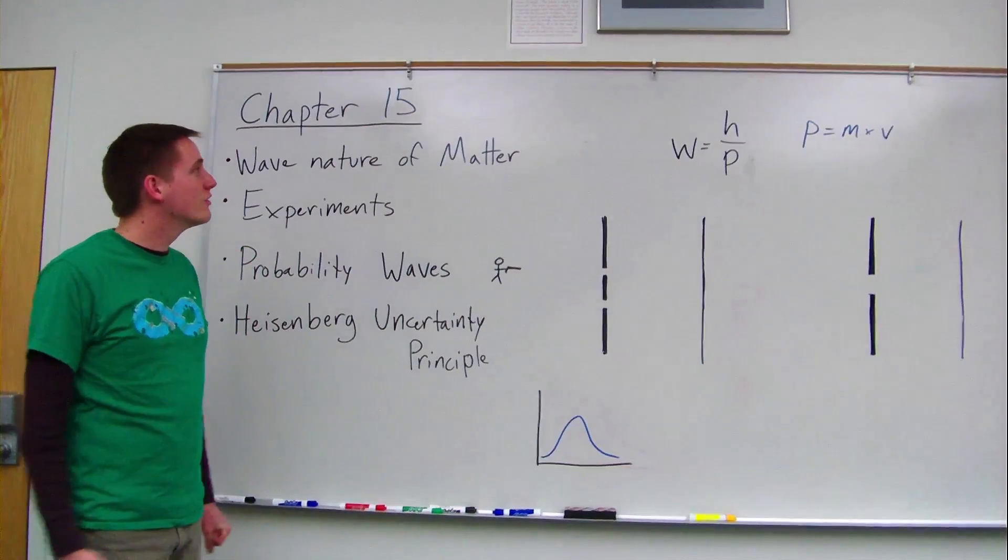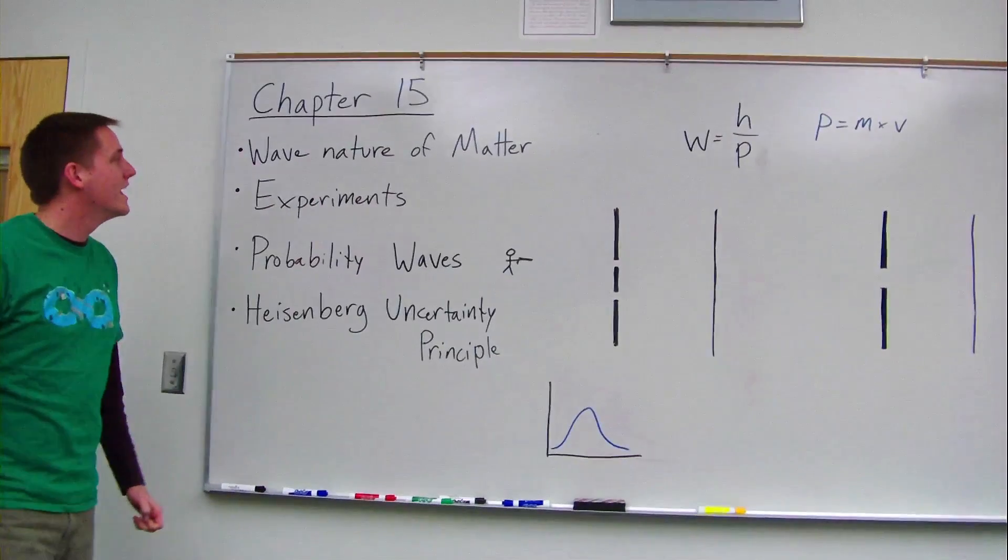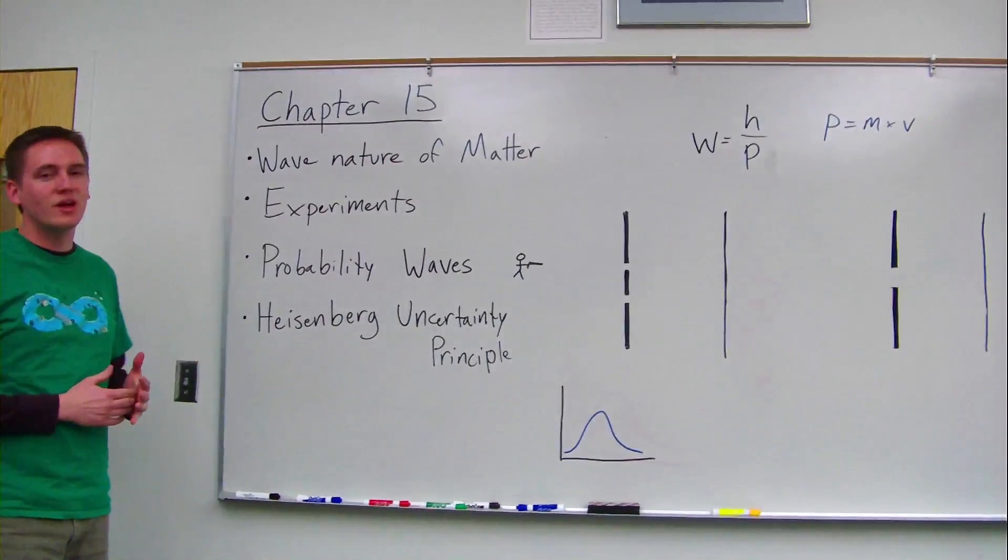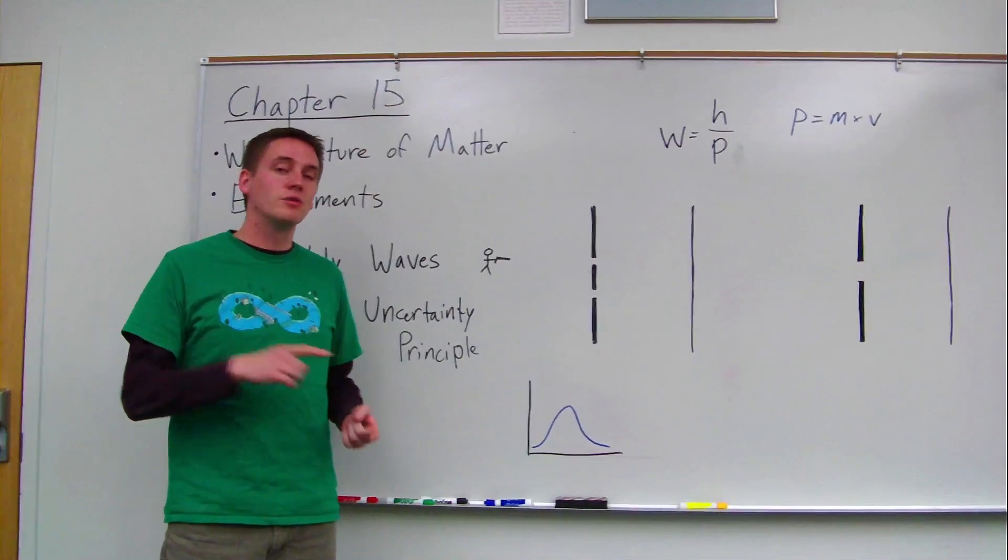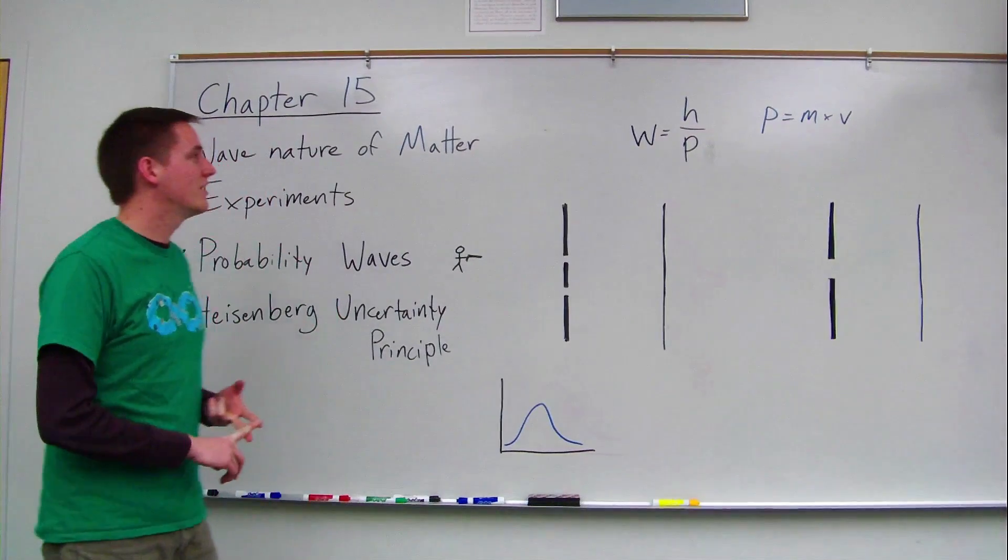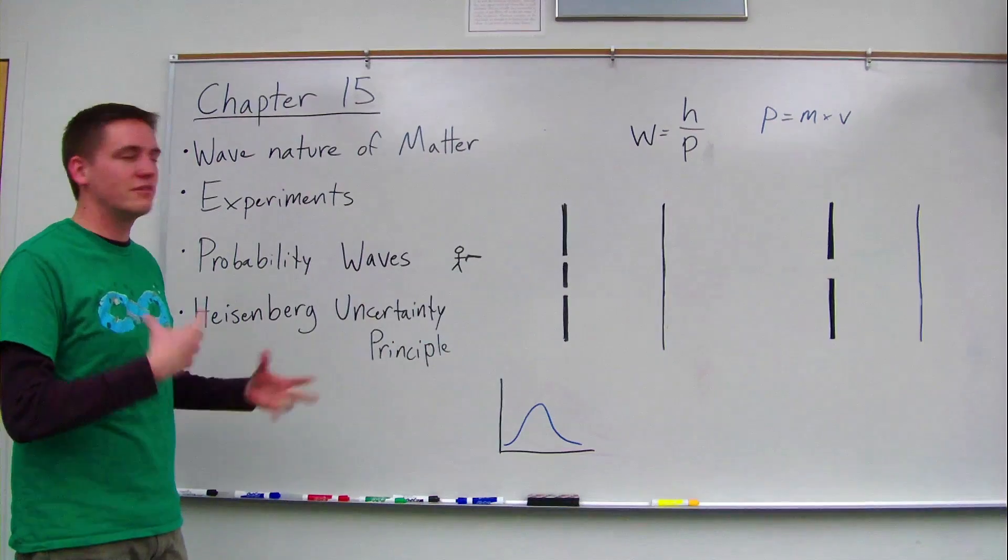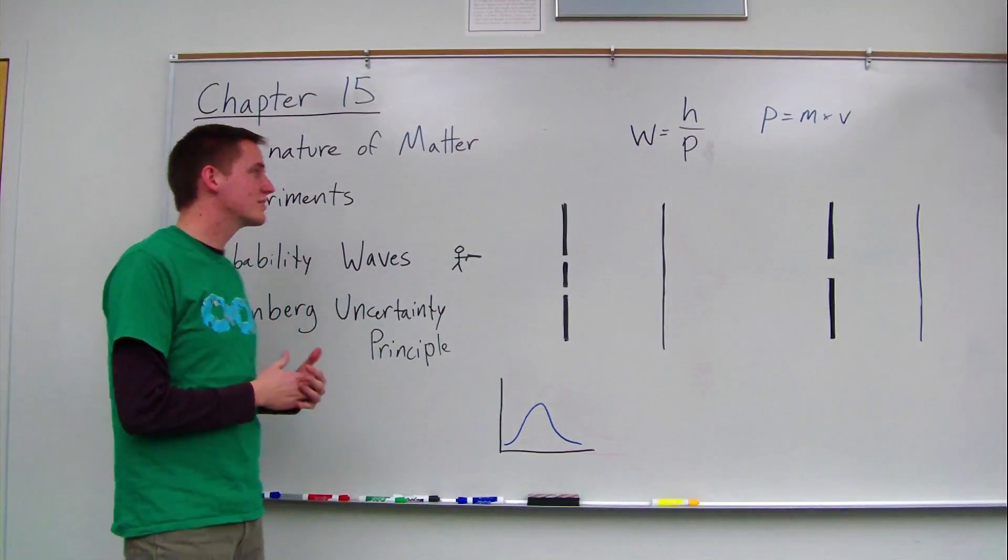Hi, this is a quick overview of Chapter 15 for Physical Science 100. This chapter talks about the wave nature of matter. You've learned in previous chapters how light has properties of both a wave and particles. Now we're going to talk about how scientists discovered that matter acts like particles and waves, which is kind of weird.